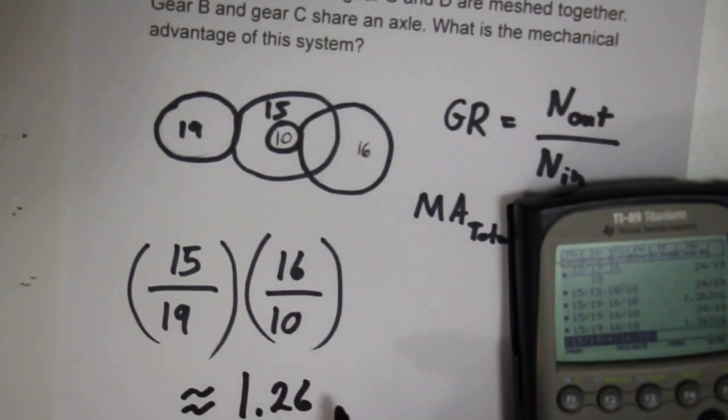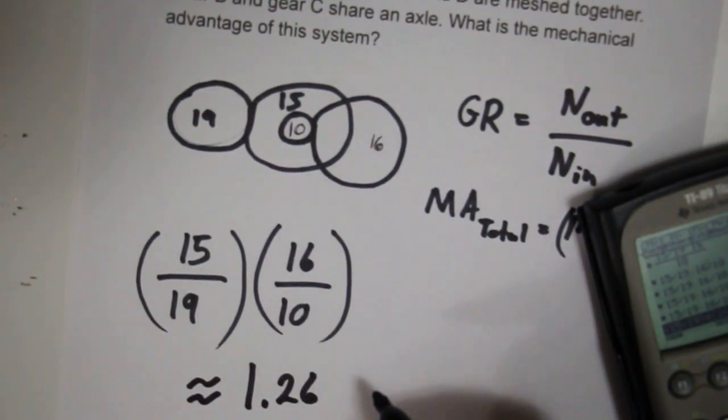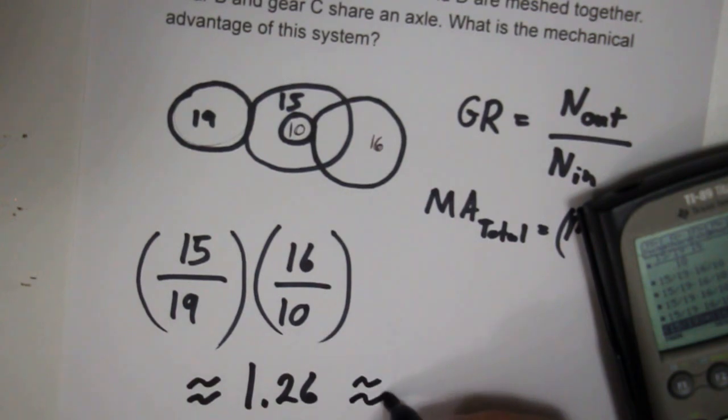This gives us 1.26 mechanical advantage. You may occasionally have this rounded off to one decimal place, so we could consider it, therefore, 1.3 mechanical advantage.